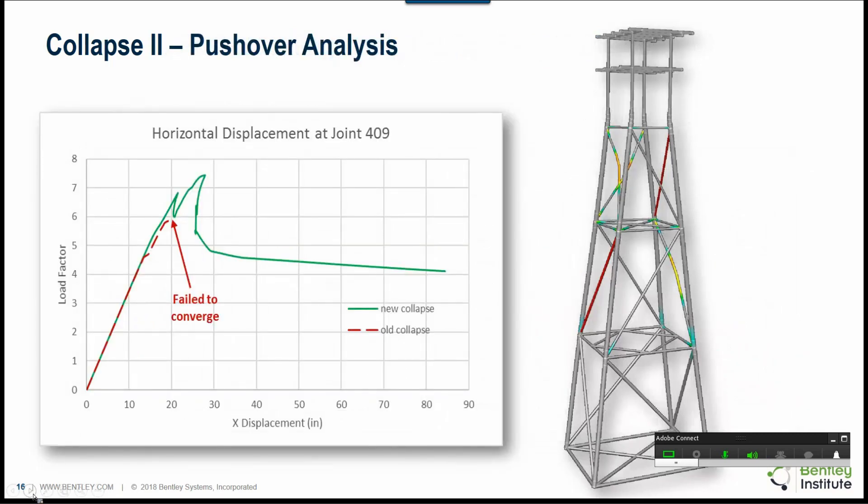This is another pushover analysis and again you can see the old collapse has failed to converge at a very early stage, whereas the new collapse now continues to show the first failure and then the peak load and then it subsequently starts to unload. Now, from all our tests so far, the old collapse tends to give what we call conservative solutions.